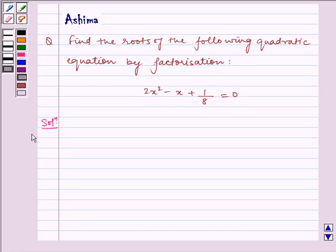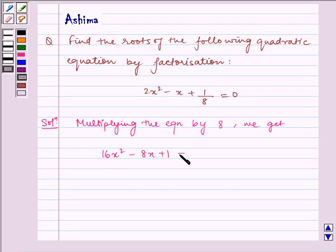Now let us write the solution. First of all, multiplying the given equation by 8, we get 16x² - 8x + 1 = 0.